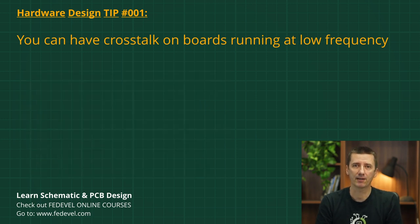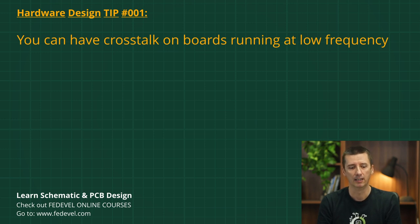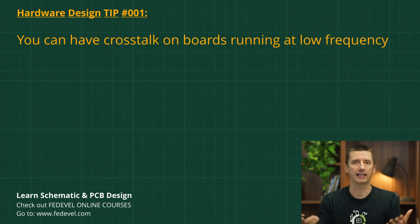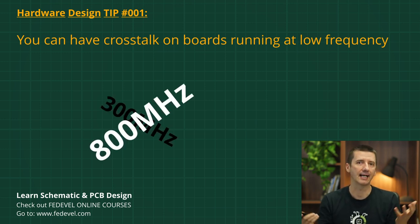Many people think that this crosstalk — this noise between signals — is only happening on high-speed boards, and that we need to be careful about crosstalk only when routing very fast interfaces or buses, for example running at 300 megahertz, 800 megahertz or more.